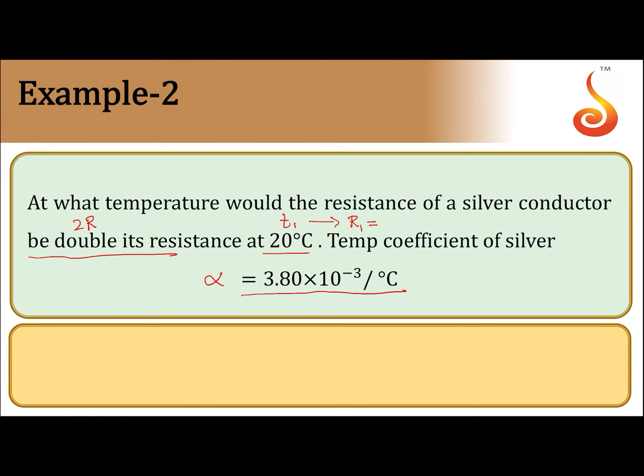Here, R1 equals R, R2 equals 2R, T1 equals 20. You need to find T2. Alpha value is given.